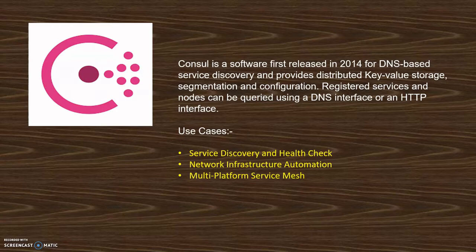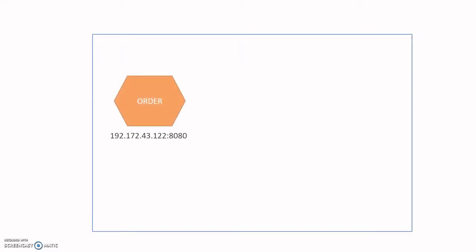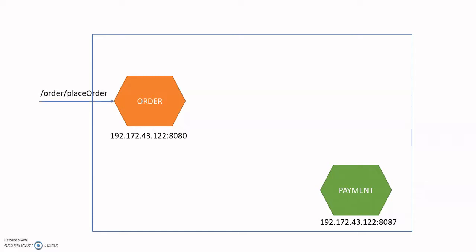Use cases include service discovery, health checks, network infrastructure automation, and multi-platform service mesh. What we are going to focus on in this tutorial is service discovery and health check. Our use case scenario is: consider a system with two microservices — one is an order service and another is a payment service, both hosted with their respective IPs and ports.